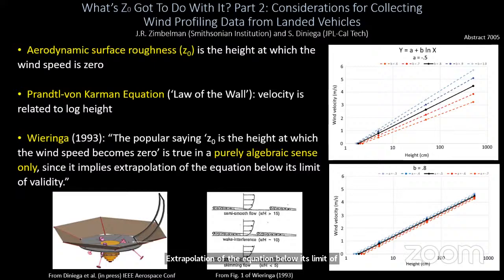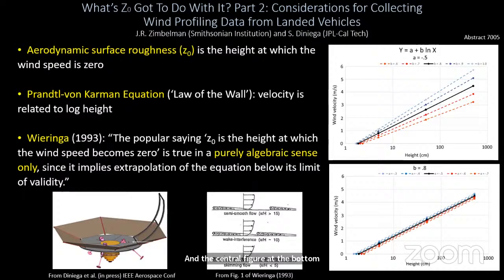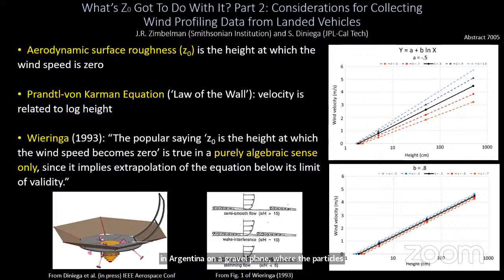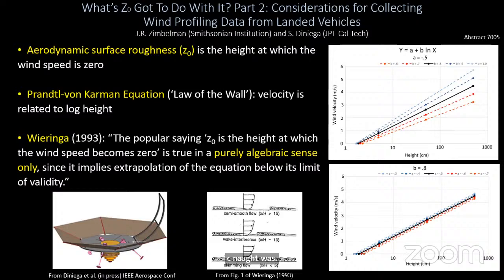The central figure is from the Warringah paper showing three different types of wind flow. The bottom one is the one of importance — encountered in Argentina on a gravel plane where the particles were so close together that using the law of the wall, we were not getting a reasonable estimation of Z_0. It's because of skimming flow. The other figures are from the abstract and e-poster, showing ways of getting a handle on how sensitive our law of the wall fits may be to those two parameters.